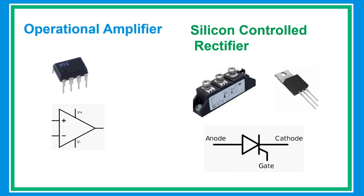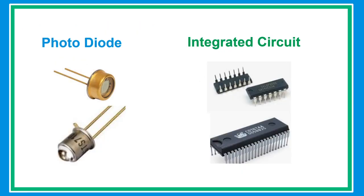A silicon controlled rectifier is a three-layer or four-layer semiconductor current controlling device, mainly used in devices for controlling high power. A photo diode is one type of light detector used to convert light into current or voltage based on mode of operation. An IC or integrated circuit is a small electronic device consisting of transistors, resistors, and capacitors.